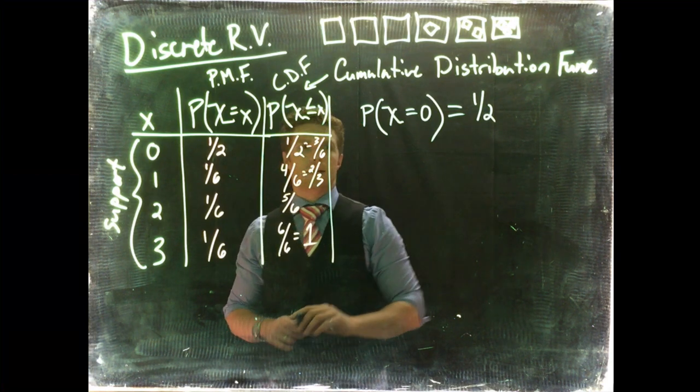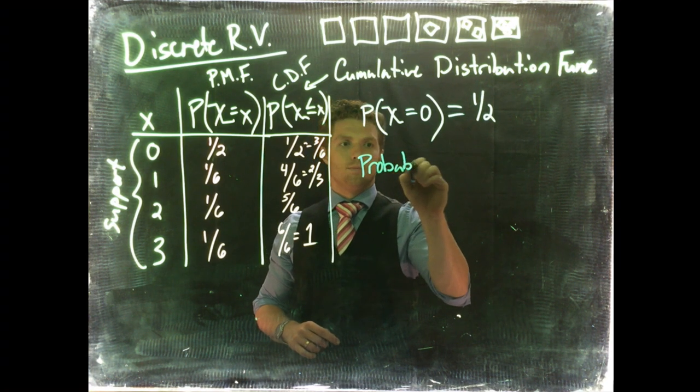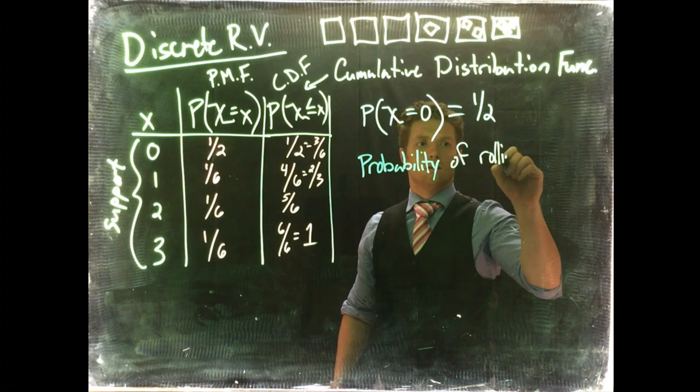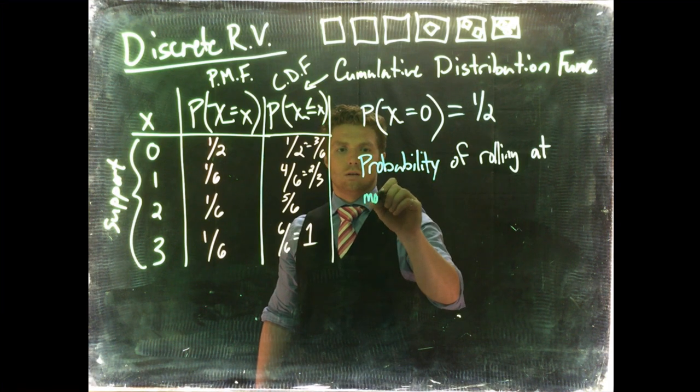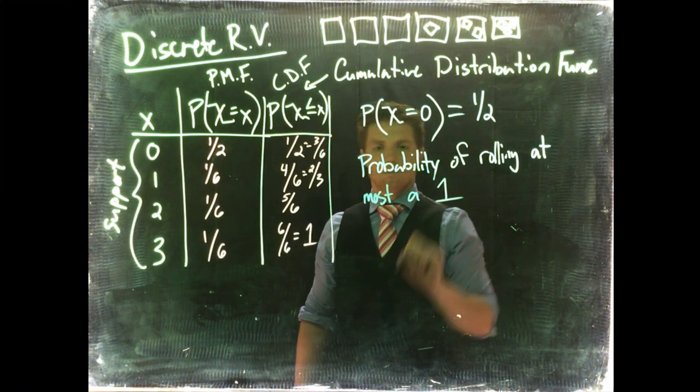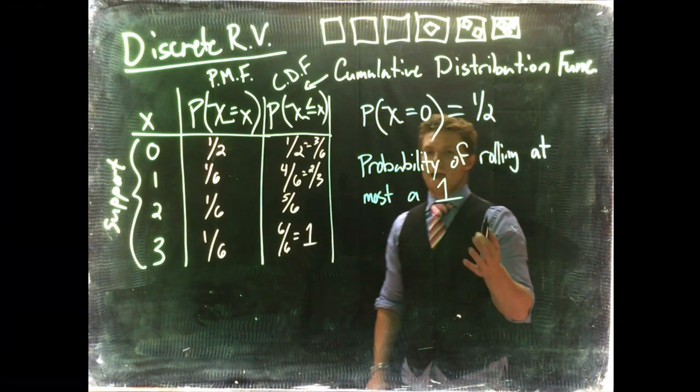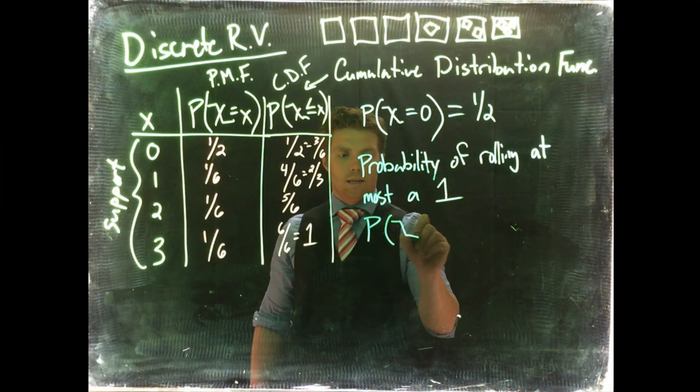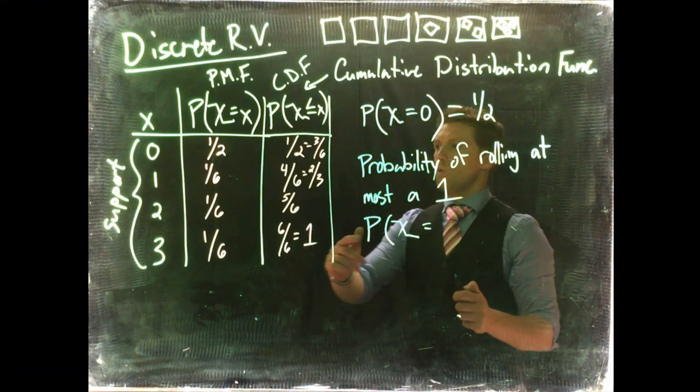Let's keep on going down to some more complicated ones. Okay, so what's the probability of rolling at most a 1? Okay, so now we've got kind of this word problem. Okay, what's the probability of rolling at most a 1? So translating this, we'd say the probability of our discrete random variable, our roll, of rolling at most a 1.